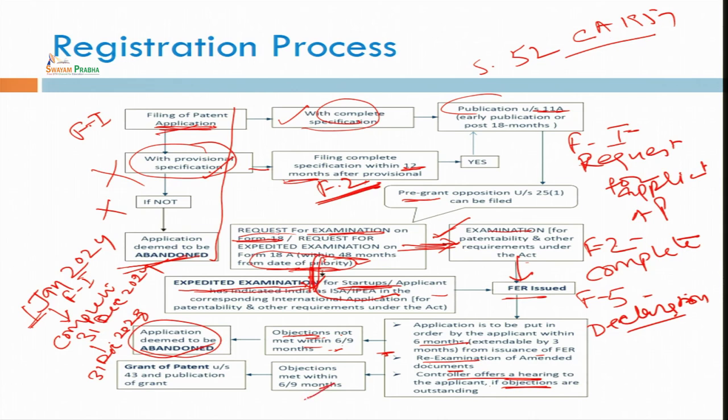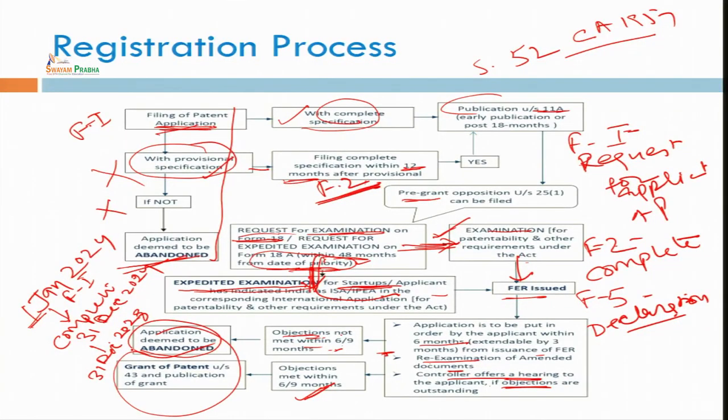If your objections are met within 6 to 9 months, and the objections have been cleared by the inventor, then the certificate of patent will be granted to you. It may take 2 to 4 years nowadays, because the Government of India is doing commendable work in granting patents by the prescribed procedure. But now the time taken by the patent office for grant of patents is very much less than before.